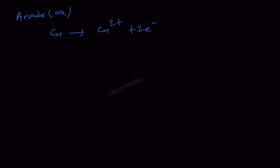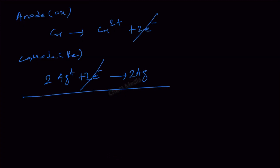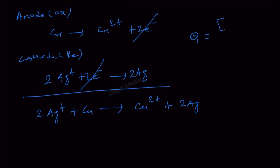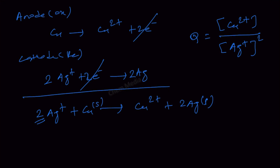Now let's determine Q. At the anode, oxidation occurs: Cu → Cu²⁺ + 2e⁻. At the cathode, reduction occurs: Ag⁺ + e⁻ → Ag. To balance electrons, we multiply the cathode half-reaction by 2, giving: 2Ag⁺ + Cu → Cu²⁺ + 2Ag. Therefore, the reaction quotient Q equals the concentration of Cu²⁺ divided by the concentration of Ag⁺ squared. Solids are not included in Q.